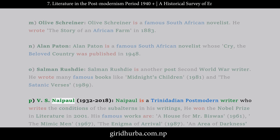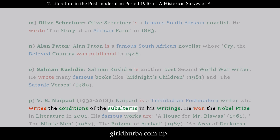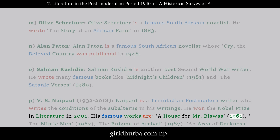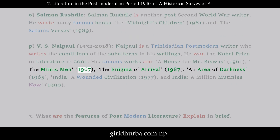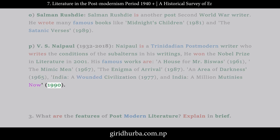P. V.S. Naipaul (1932–2018): Naipaul is a Trinidadian postmodern writer who writes about the conditions of subalterns. He won the Nobel Prize in Literature in 2001. His famous works are A House for Mr. Biswas (1961), The Mimic Men (1967), The Enigma of Arrival (1987), An Area of Darkness (1965), India: A Wounded Civilization (1977), and India: A Million Mutinies Now (1990).